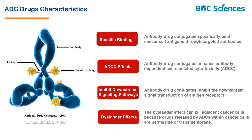Third, inhibit downstream signaling pathways: the antibody component of the ADC specifically binds to the antigen target of cancer cells and inhibits downstream signal transduction of antigen receptors to induce apoptosis of cancer cells. For example, the antibody component of the ADC drug Kadcyla can bind to HER2 receptor in cancer cells, which inhibits the formation of heterodimers between HER2 and HER1, HER3, or HER4, thereby inhibiting cell growth signaling pathways.